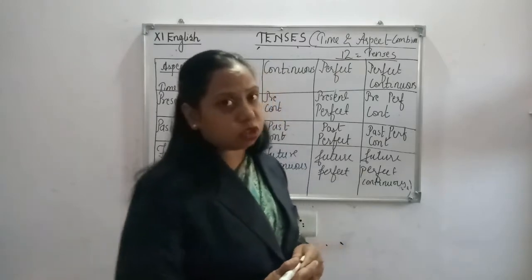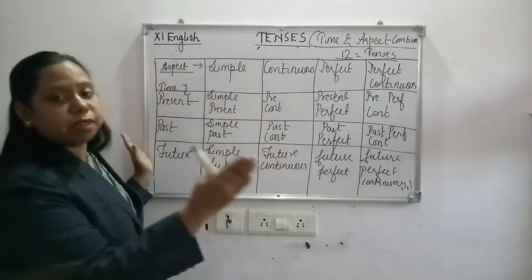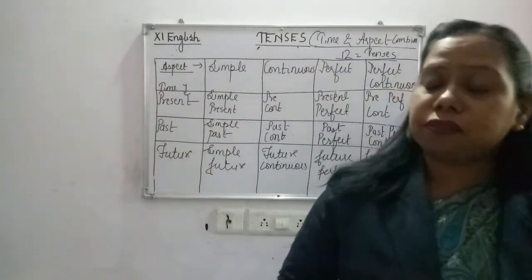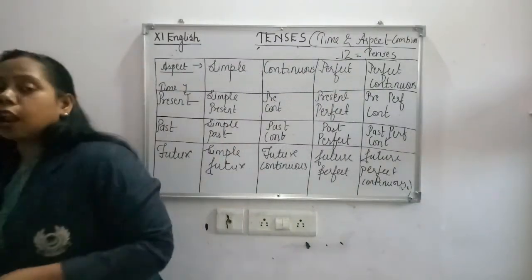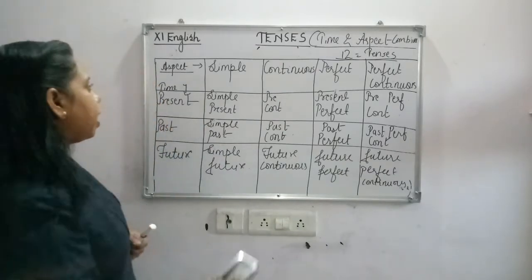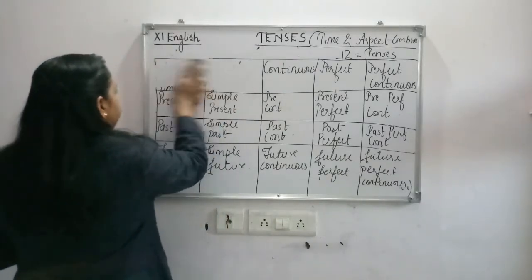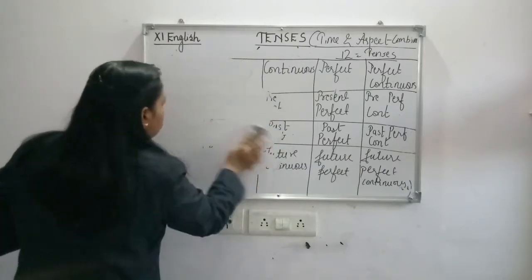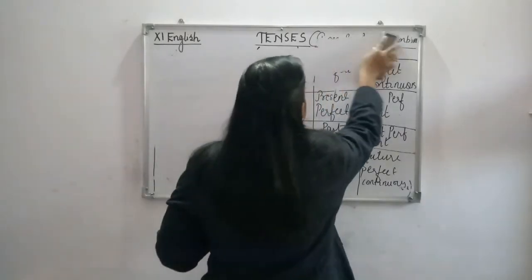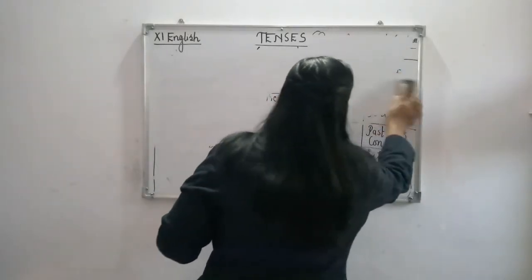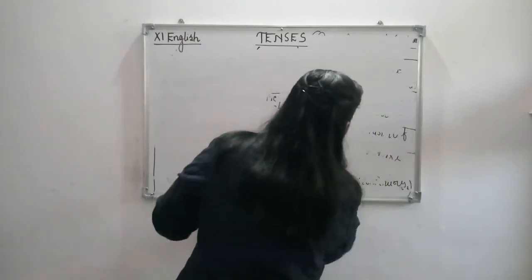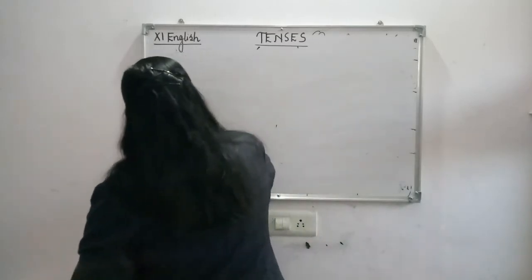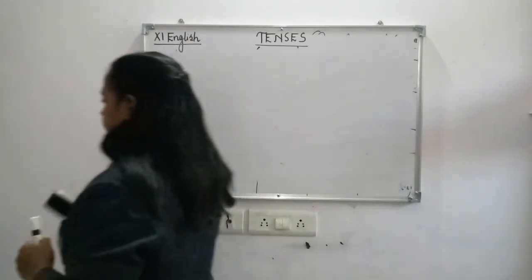This is the combination — we are getting 12 types of tenses. It is very easy to understand how time and aspect combine to form 12 different types of tenses. We are going to study each one. Sit along with your pen and copies. First note it down and then we will head for the explanation.